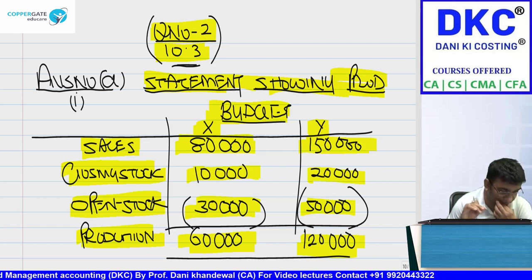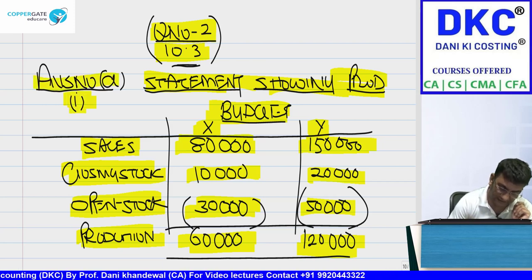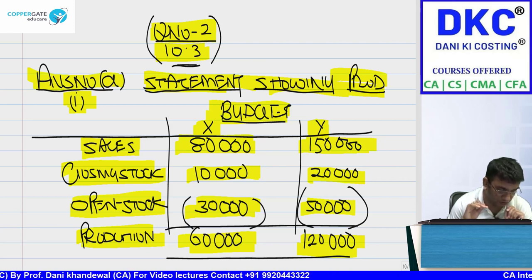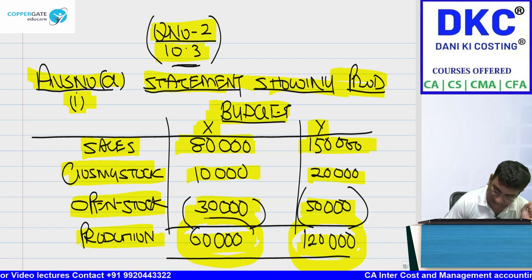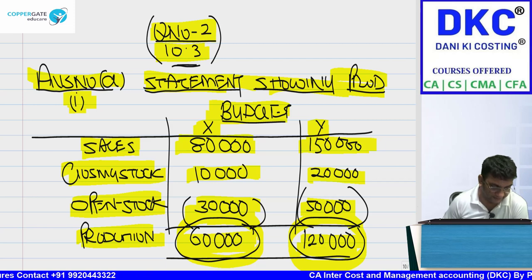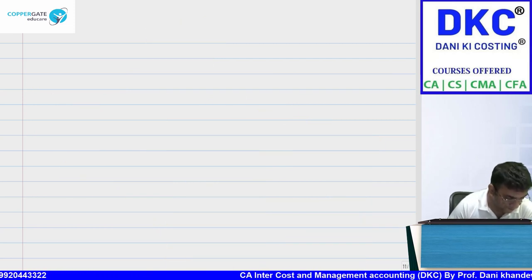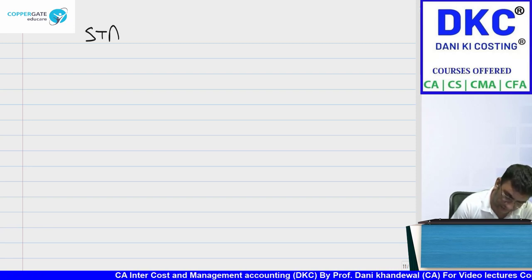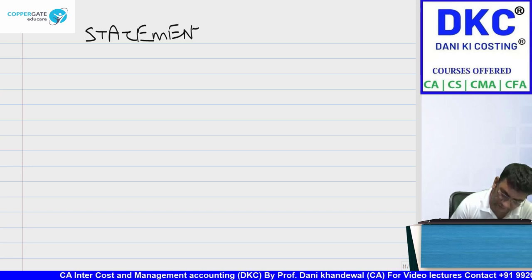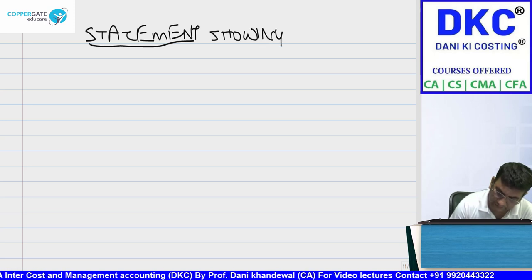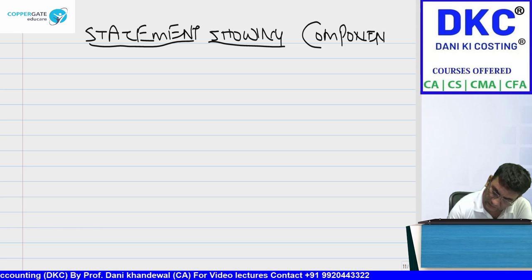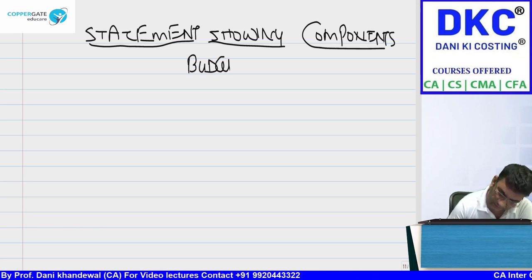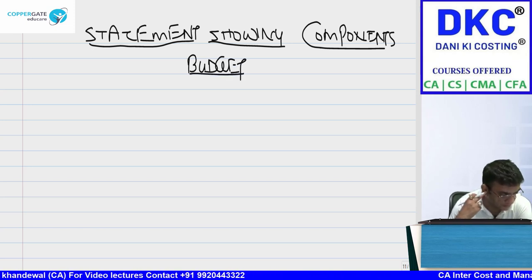Now we move to the second part of answer A. What is the budget of production and requirement of the components? This is production multiplied by the raw material required. It means: statement showing components budget.